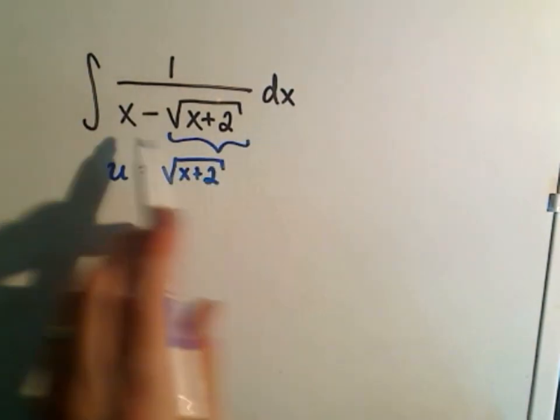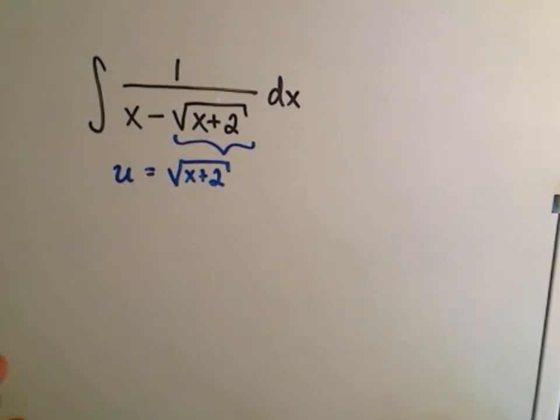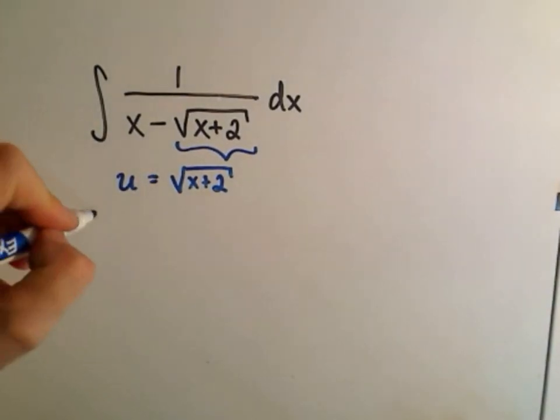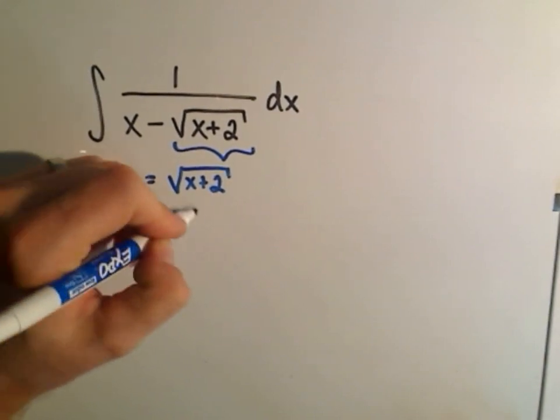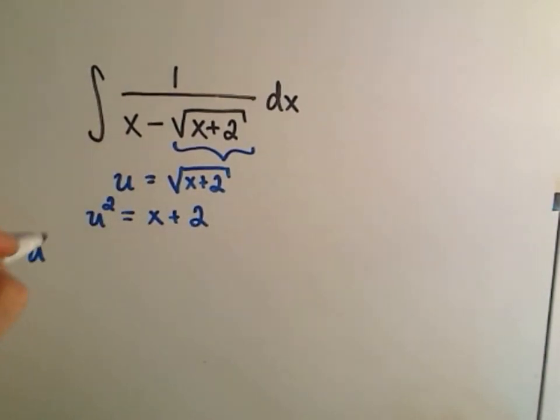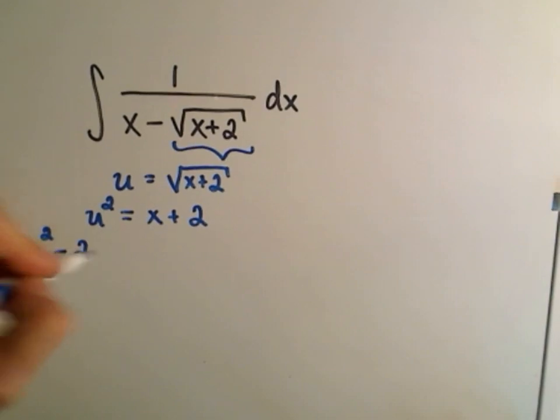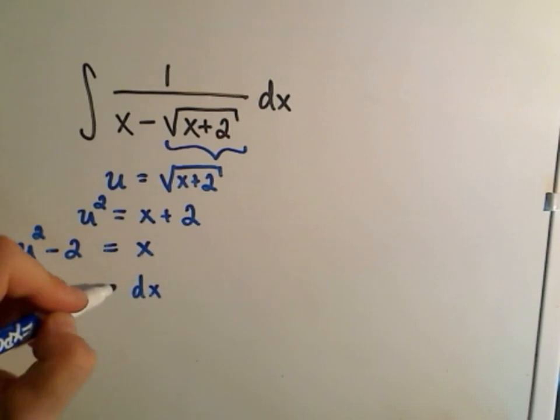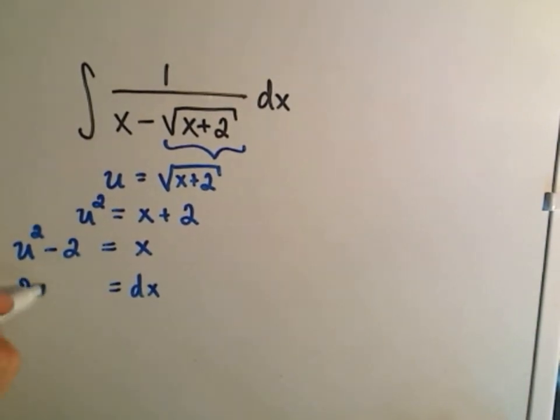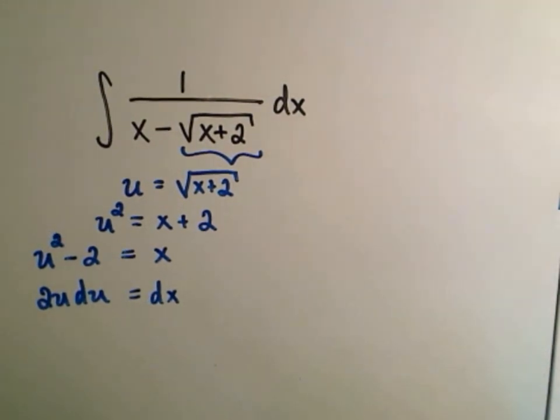I need to calculate both x and dx to replace in this formula. So if I square both sides, I get u squared equals x plus 2, which means u squared minus 2 is equivalent to x. And likewise, I can take the differential and get 2u du equals dx.